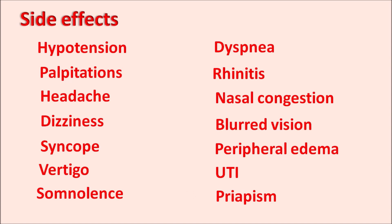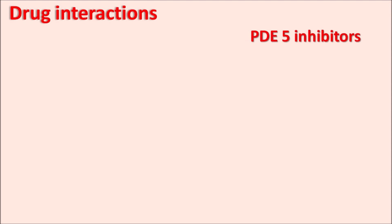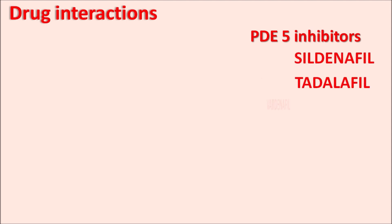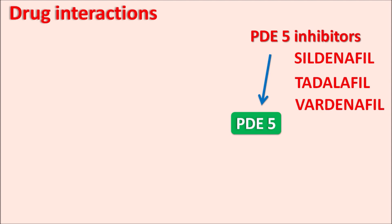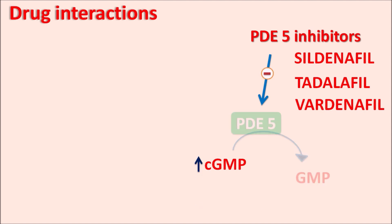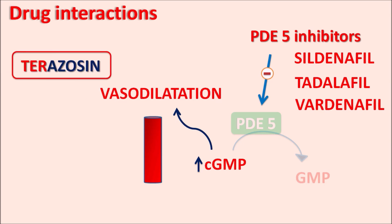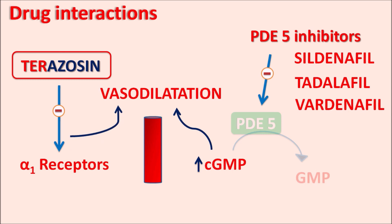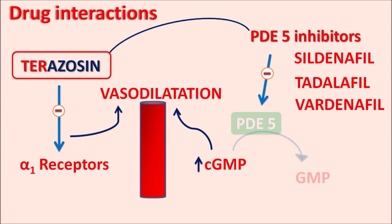One significant drug interaction is observed between phosphodiesterase type 5 (PDE5) inhibitors and Terazosin. Drugs like Sildenafil, Tadalafil, and Vardenafil are PDE5 inhibitors. These drugs inhibit the PDE5 enzyme, which normally converts cyclic GMP into GMP, thereby increasing cyclic GMP levels and producing vasodilation. Terazosin also produces vasodilation by blocking alpha-1 receptors. When these two drugs are combined, they produce severe vasodilation. Care should be taken when Terazosin is combined with PDE5 inhibitors, and the lowest dose should be prescribed to minimize severe vasodilation and its complications.